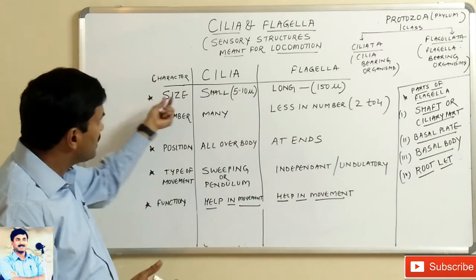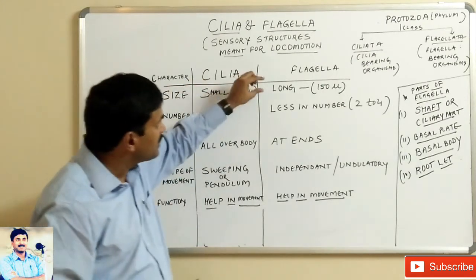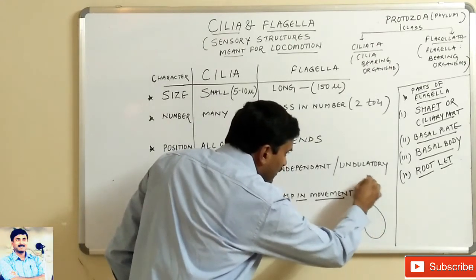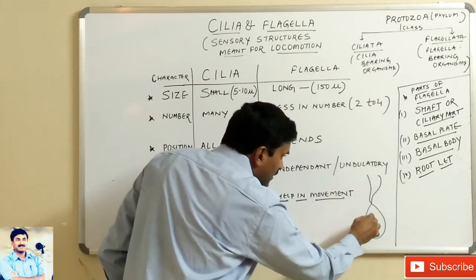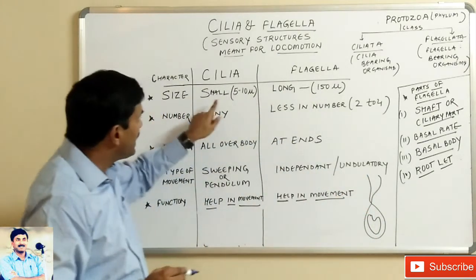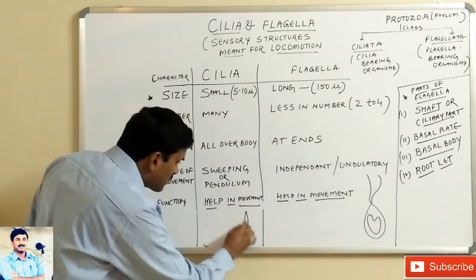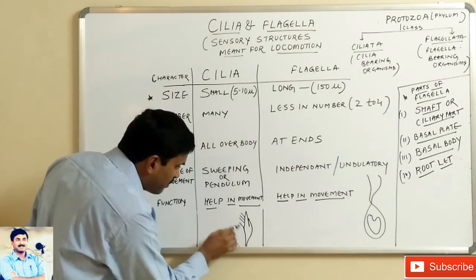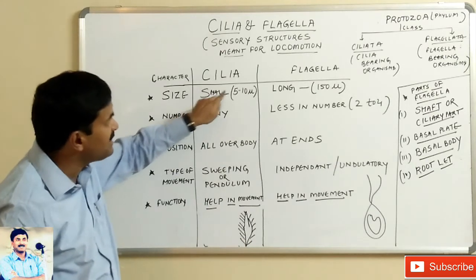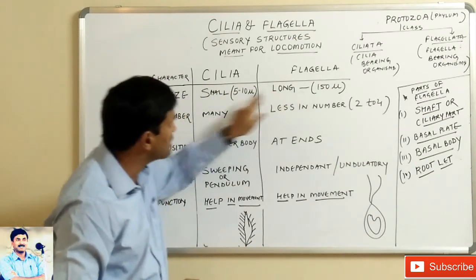The first character is size. Cilia are small in size while flagella are long in size. Flagella are approximately 150 micrometers and cilia are 5 to 10 micrometers. If we see the structure of Paramecium, small cilia are present all over it, so cilia are small in size and flagella are long in size.